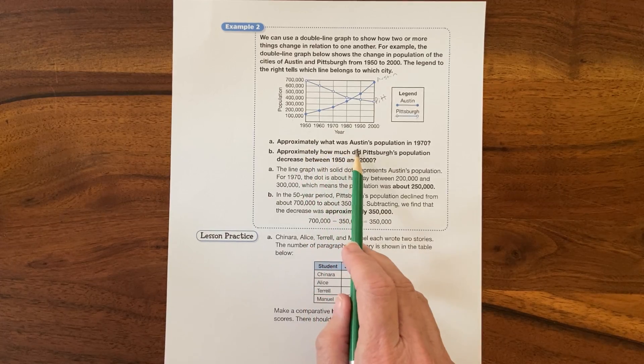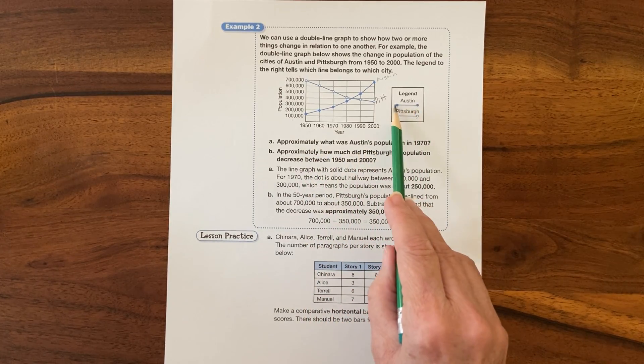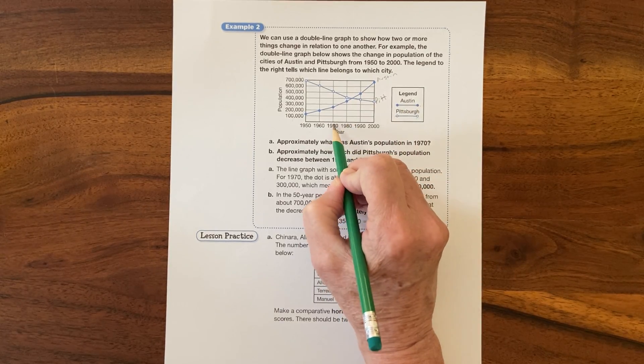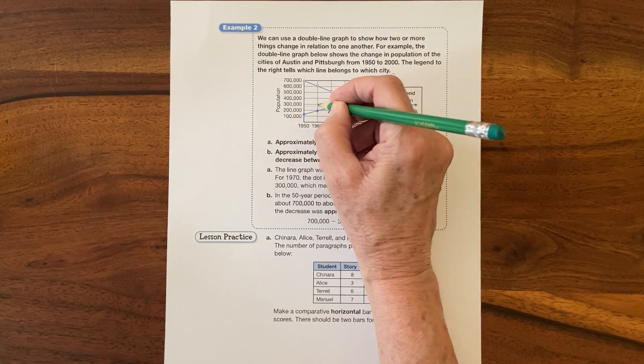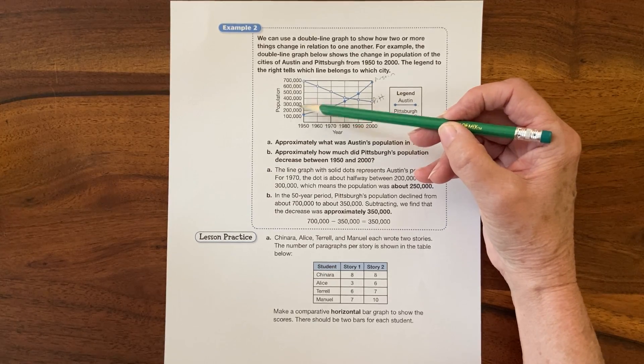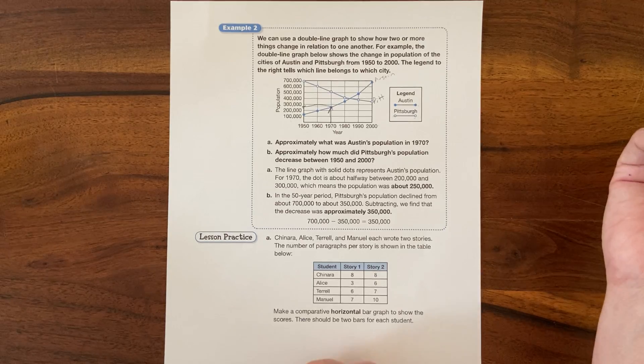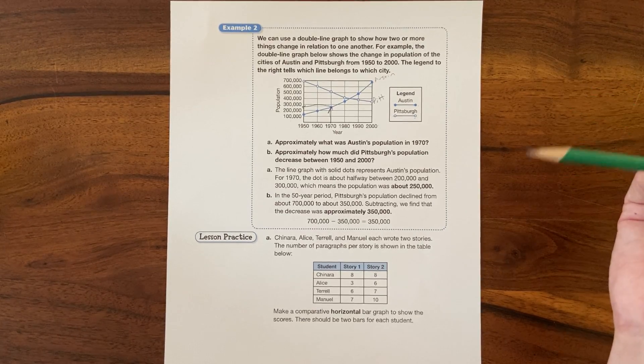So approximately what was Austin's population in 1970? Austin is the one with the filled in circles. Here's 1970, so I'm going to go up there and then go back over - up and over. And I see that it's between 200,000 and 300,000, maybe a little bit closer to the three - maybe 260,000, 250,000, something like that.